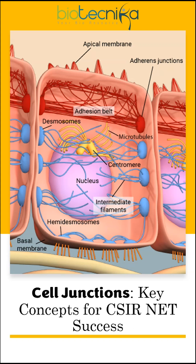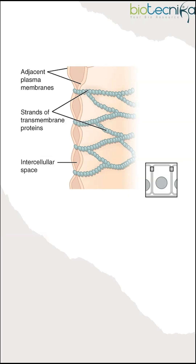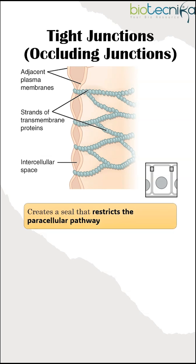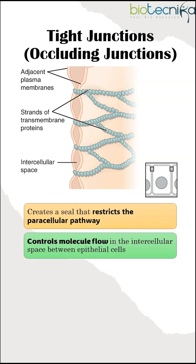Cell Junctions: Key Concepts for CSI. Tight Junctions, or Occluding Junctions, create a seal restricting the paracellular pathway and controls molecular flow.